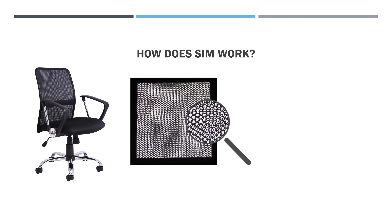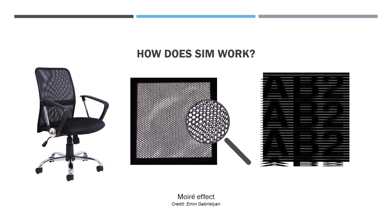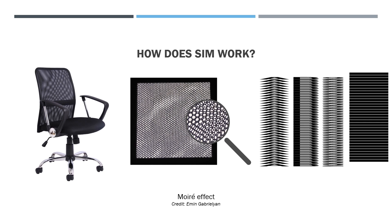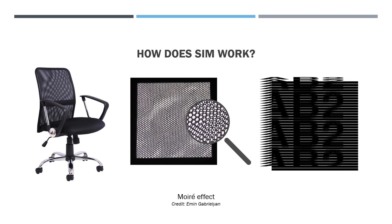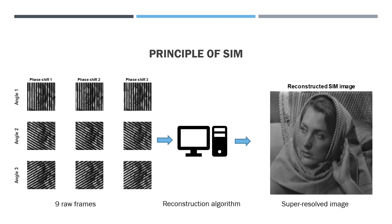In traditional fluorescence microscopy we illuminate the sample with uniform light and collect the emitted fluorescence. Because of the diffraction limit, we lose high-resolution information in the process. On this example, the stripes on the scarf of the lady visible in the sample are no longer visible in the microscope image. With SIM this is a different story — instead of projecting uniform light onto the sample, we illuminate it with striped light that we shift and rotate at different angles, as you can see in the middle picture. This allows us to extract high-resolution information that we could not access with traditional microscopy, and reconstruct a super-resolved image.